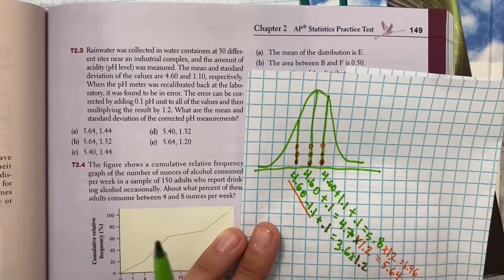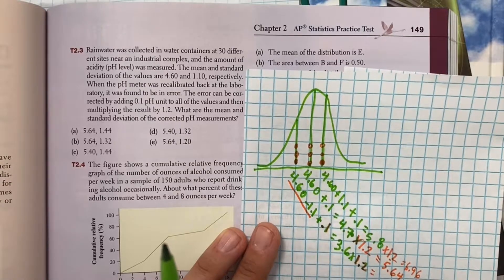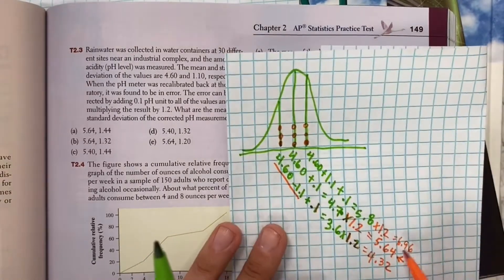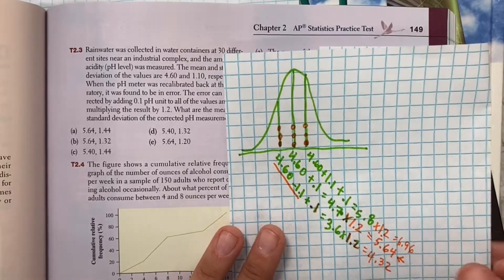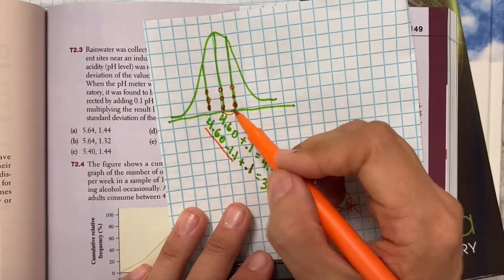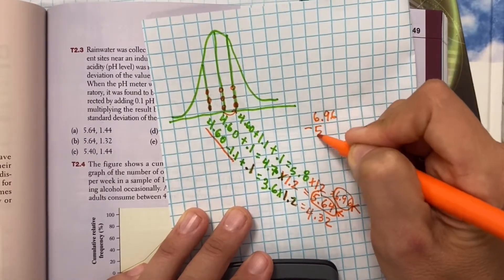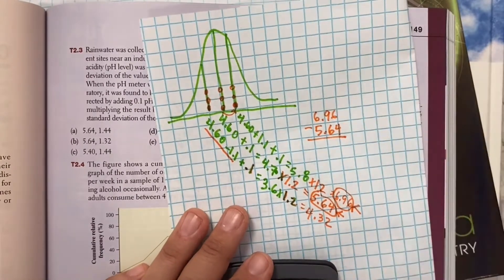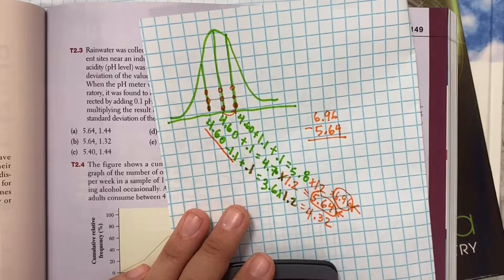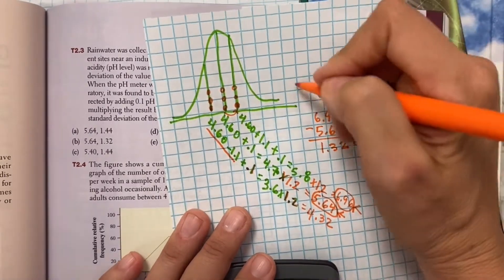So it looks like my mean value, I can already eliminate C and D. And then this is one standard deviation above the mean. This is one standard deviation below the mean. But let's figure out how much the standard deviation actually changed. So if I compare these two numbers, that's one standard deviation above the mean. So if I take 6.96 and subtract it from 5.64, I can find out what is my standard deviation now. It's 1.32. So after this change, I'm going to pick B. My standard deviation definitely changed by this amount.